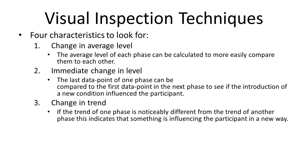Even if you don't really expect the data to be trending and you're expecting to find levels, you should still look for potential changes in trend. If the trend of one phase is noticeably different from the trend of another phase, that would clearly indicate something is influencing the participant in a new way.